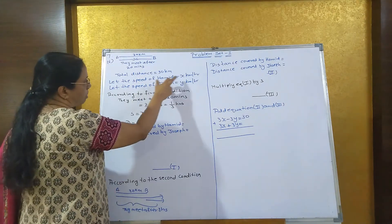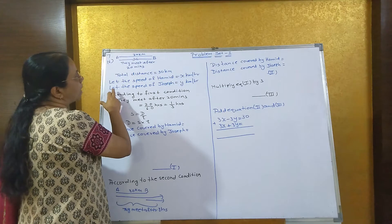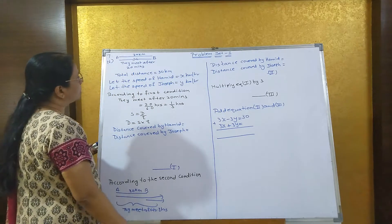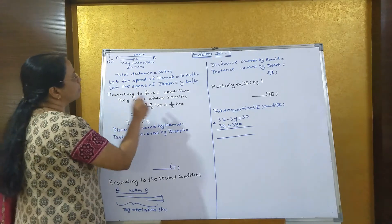So let the speed of Hamid be x km per hour and let the speed of Joseph be y km per hour. Now according to the first condition,